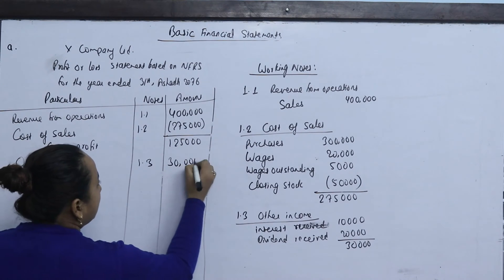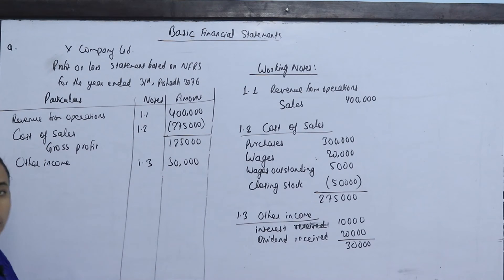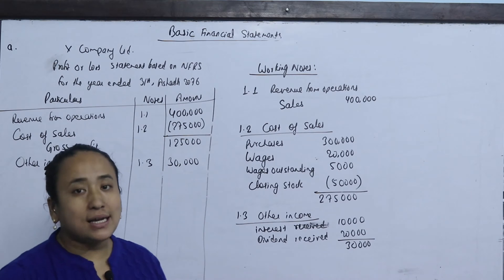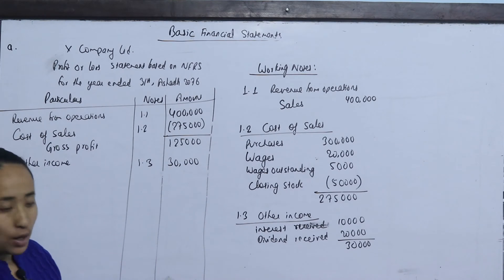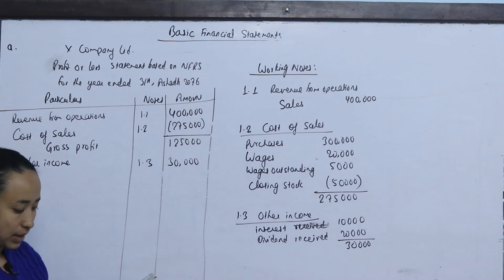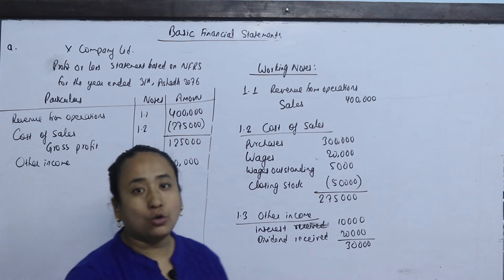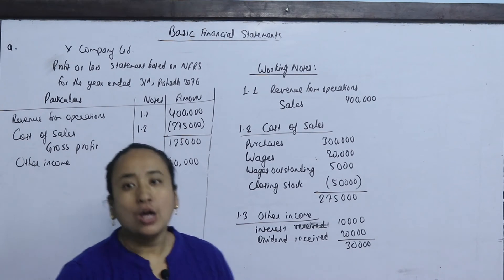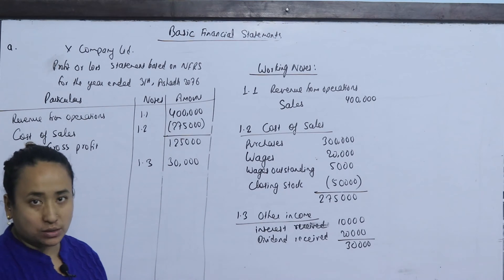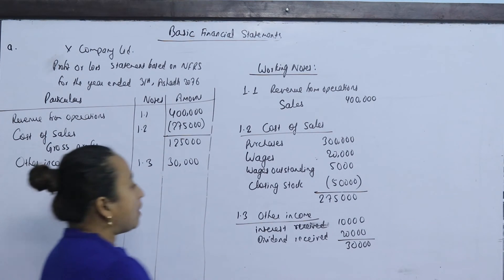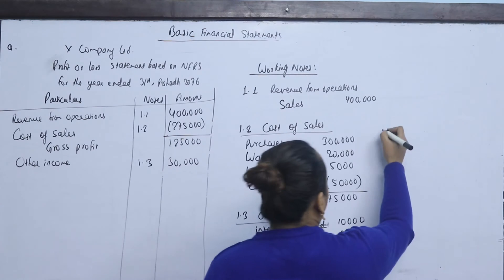Next is Distribution Expenses or Selling and Distribution Expenses. This includes advertisement, marketing, and bad debt expenses.